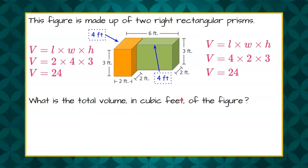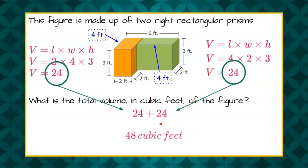So both of these right rectangular prisms have a volume of 24. But we're asked to find the total volume in cubic feet. All my measurements were given to me in feet. So I'm going to go ahead and add the two volumes together. And 24 plus 24 is 48 cubic feet.